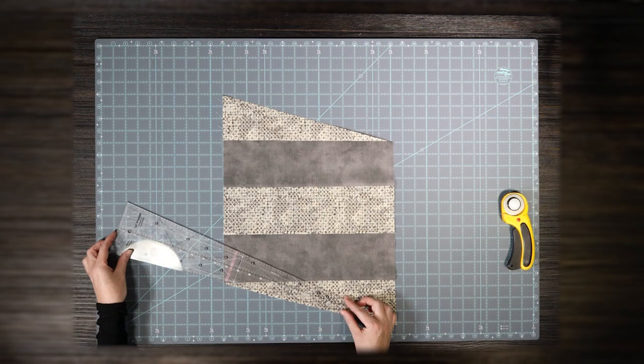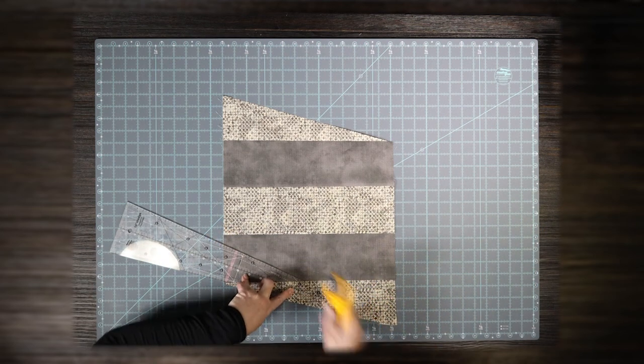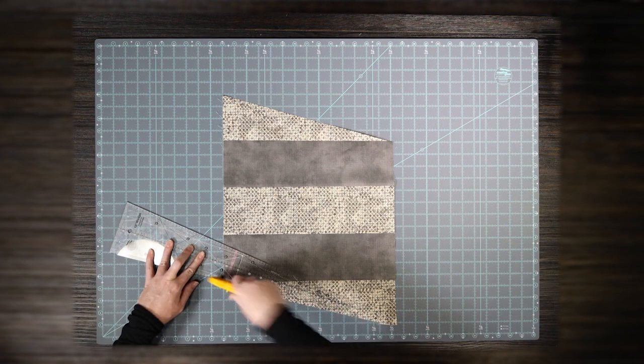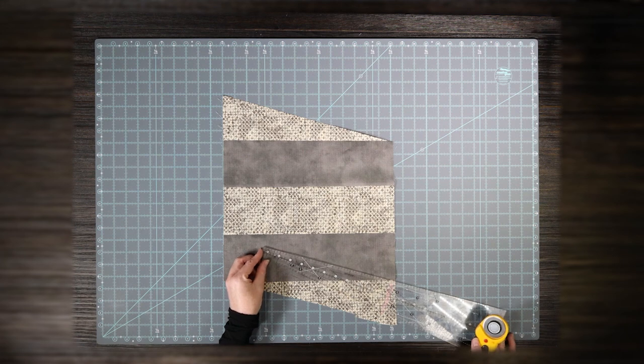Align your wedge and cut all the way around the tool. Rotate the tool 180 degrees and recut on that same line.